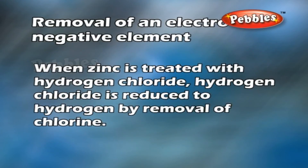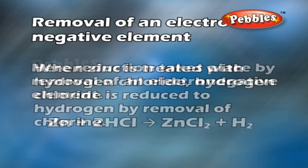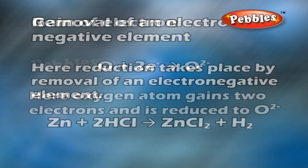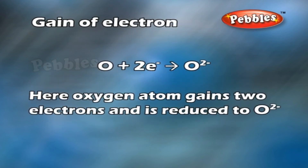Removal of an electronegative element: when zinc is treated with hydrogen chloride, hydrogen chloride is reduced to hydrogen by removal of chlorine — reduction takes place by removal of an electronegative element. Gain of electron: oxygen atom gains two electrons and is reduced to O²⁻.